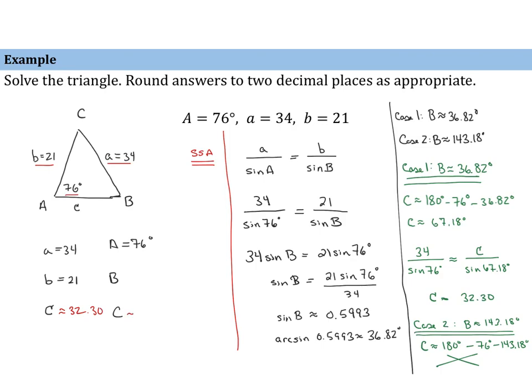Angle C was calculated to be 67.18 degrees, and angle B was 36.82 degrees. In the previous examples, we have seen that side-side-angle can yield no solution, two solutions, or one solution.